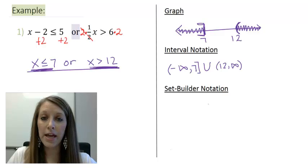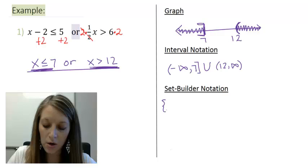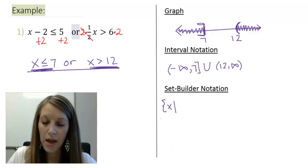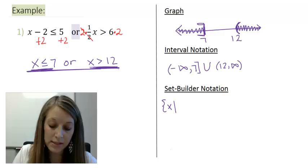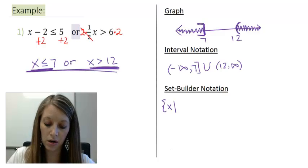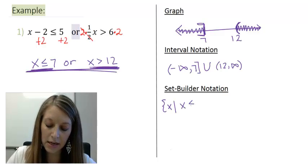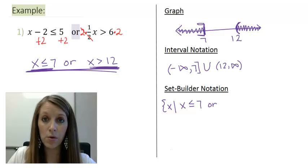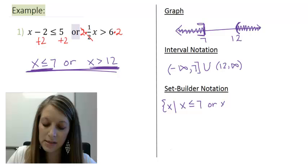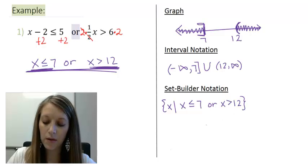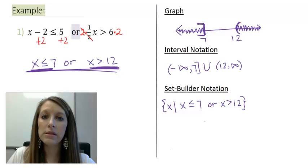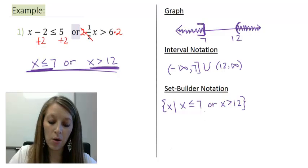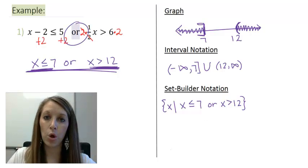Our set builder notation does not change from what we've ever done in the past. We start with our braces and X such that, and then we fill in our blank with the same solution that we had over here. X is less than or equal to 7, or, and we do use the word or there, X is greater than 12. And so, now you can see what a compound inequality with an OR statement might look like.